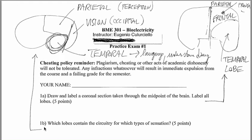The second question asks, which lobe contains the circuitry for which type of sensation? Now, potentially you can draw the whole brain or you can just list that the parietal brain, so the one on the top of your skull on the back is perception. The back of your neck is vision and then sort of on the sides you have the temporal lobe, which is language and understanding.